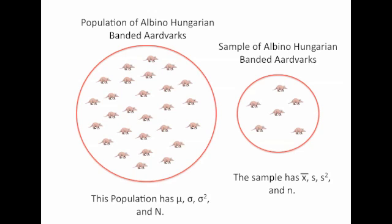We now have a sample of albino-hungarian banded aardvarks. The sample has a mean of X-bar, a standard deviation of S, and of course if we have S, we have variance of S-squared. And then we have N, which is the number in the sample.